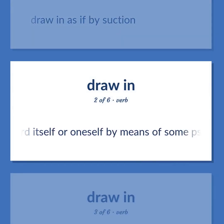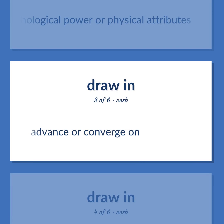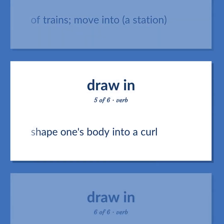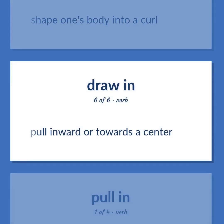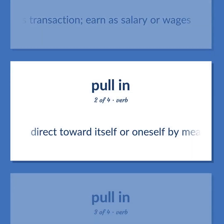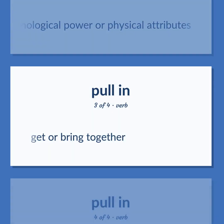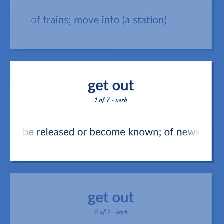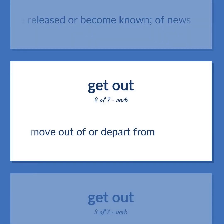Draw: to advance or converge on. Also, of trains — to move into a station. Also, to shape one's body into a curl. Also, to pull inward or towards a center. Also, to earn on some commercial or business transaction, earn as salary or wages. Also, to get or bring together. Also, of trains — to move into a station. Also, to be released or become known, of news. Also, to move out of or depart from.